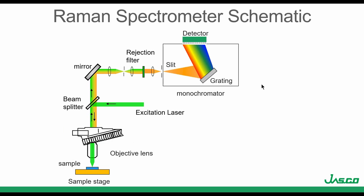This is the schematic of a Raman spectrometer. Today I want to emphasize three different parts: the objective lens, the sample stage, and the detector. The light source in a Raman spectrometer is the laser. The laser goes to a beam splitter where the light is reflected, then goes to the objective lens. It is reflected and creates the Raman signal. This Raman signal goes back, and this time it's transmitted through the beam splitter, goes to a mirror, then a rejection filter. The light is dispersed in a grating and then goes to the detector.